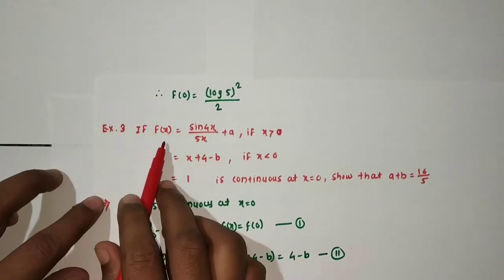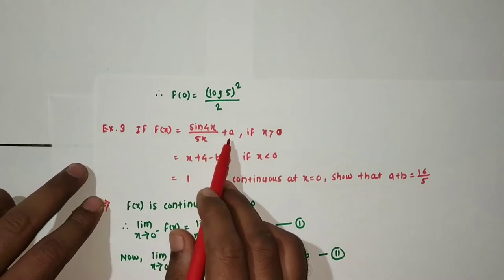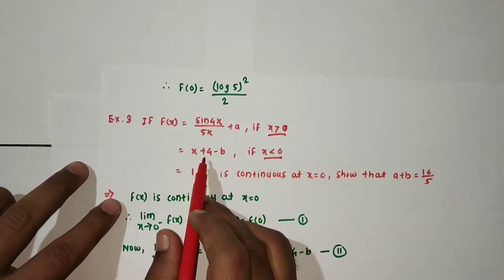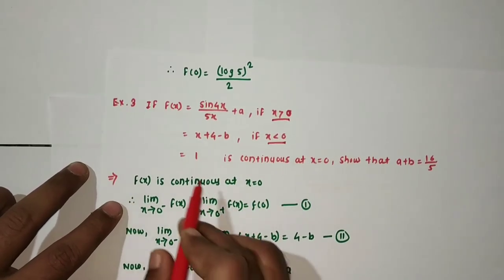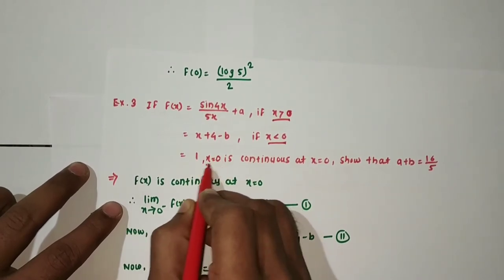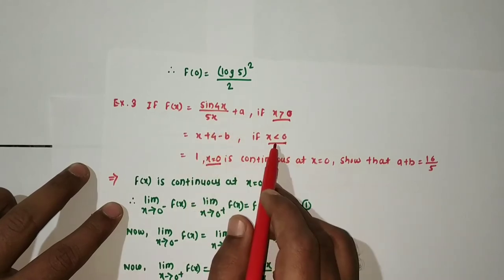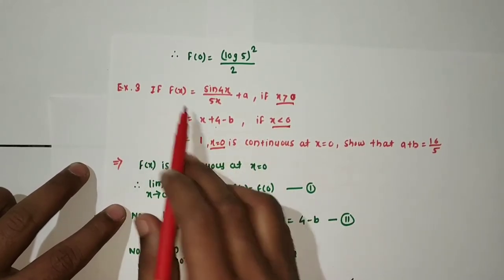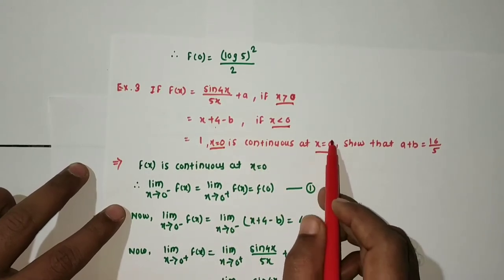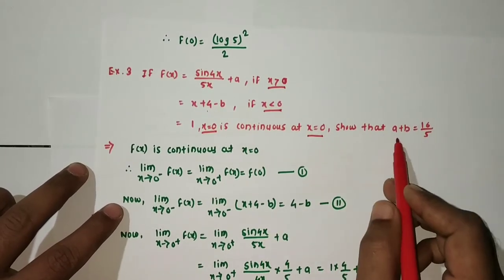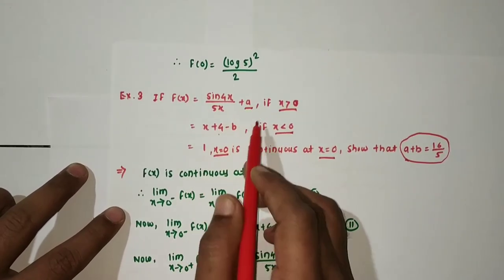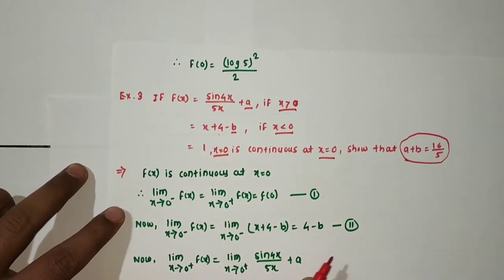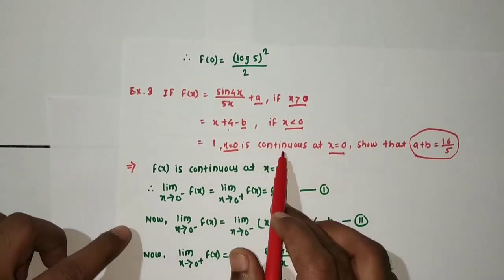Example 3: If f(x) = sin4x/(5x) + a when x > 0, f(x) = x + 4 - b when x < 0, and f(0) = 1 when x = 0, and the function is continuous at x = 0, show that a + b = 16/5.